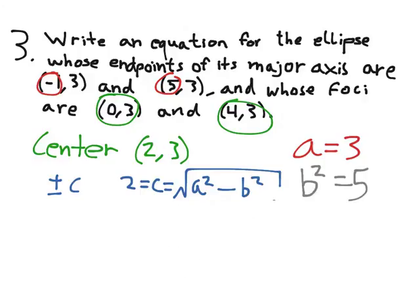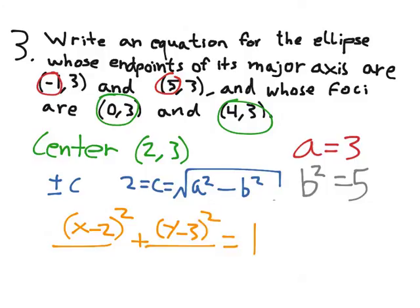Now I have values for a, b, and the center, so I can write out the equation. So x minus the center x value of 2 squared, and that's going to be over something. And we've got y minus the center y value, which is 3 squared, also going to be over something, is equal to 1. And now we have to figure out which is which.